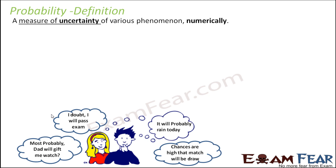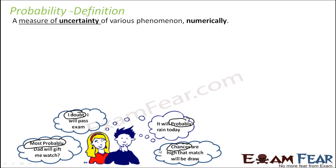For example, when someone says 'it will probably rain,' or 'chances are high that the match will be dropped,' or 'I doubt I will pass the exam,' or 'most probably my dad will give me a watch' — all these statements talk about uncertainty. This person is not 100% sure it will rain. This girl is not 100% sure her dad will give her a watch. This girl is not 100% sure she will pass the exam. This boy is not 100% sure the match will be dropped.